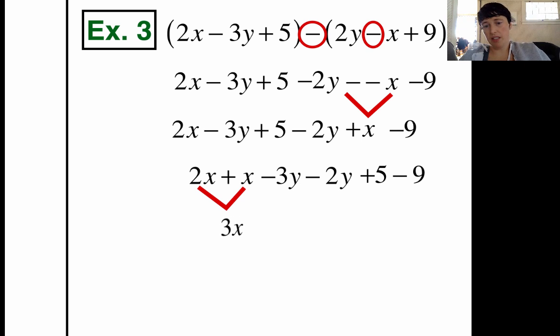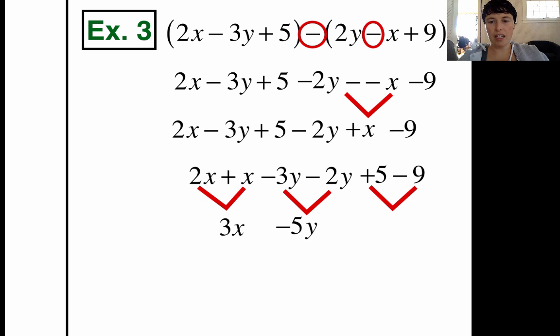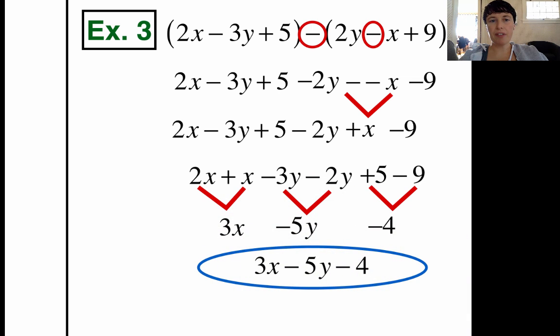2x plus x is 3x's. Negative 3y take away 2y is a KCC. So it's going to be negative 3 plus negative 2. Same signs add and keep. So it's negative 5y. And same with 5 minus 9, another KCC problem. It's like 5 plus negative 9. Different signs, we're going to subtract and make that negative 4. So our answer is 3x minus the 5y minus the 4. And that is our simplified expression.